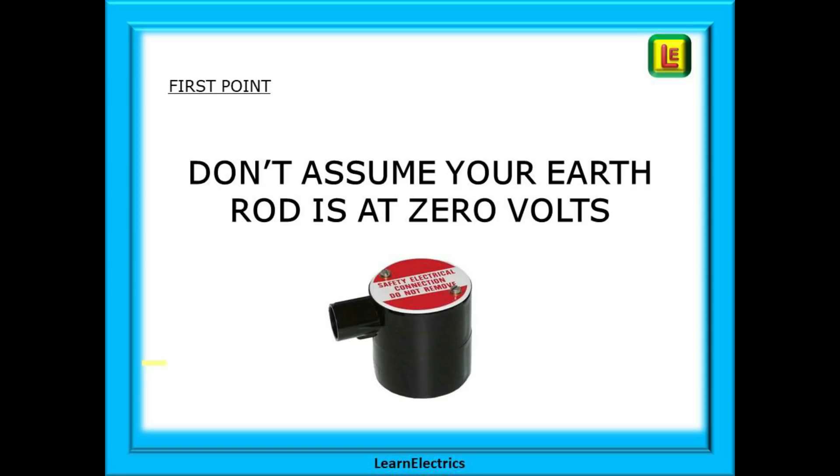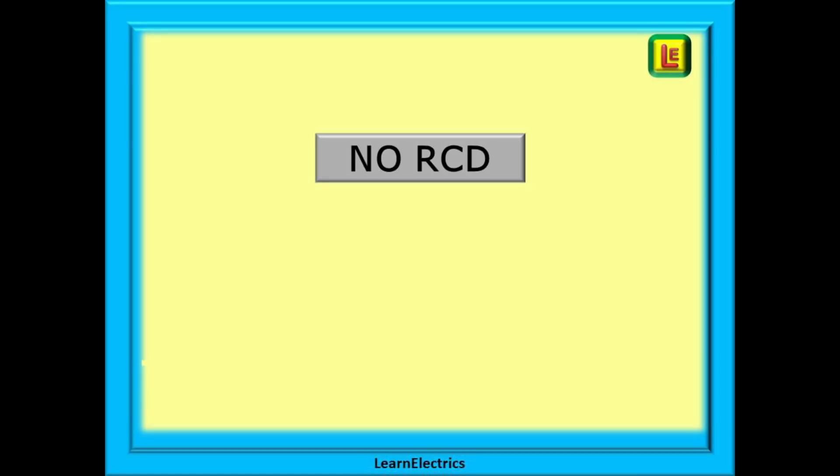The first point to make is that we should not assume that the earth rod just outside the house is always at zero volts potential. It isn't, and during a fault it can have a significant voltage on it. So let's get started and show you how this danger arises and we will begin with an installation that has no RCD fitted.